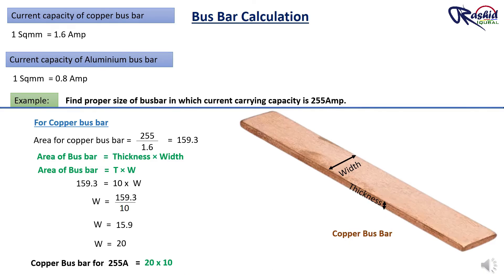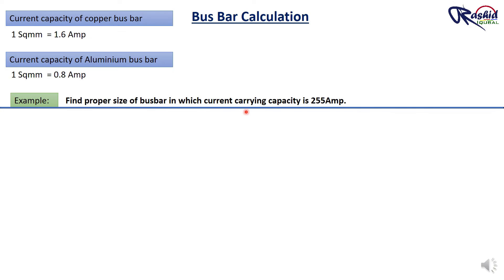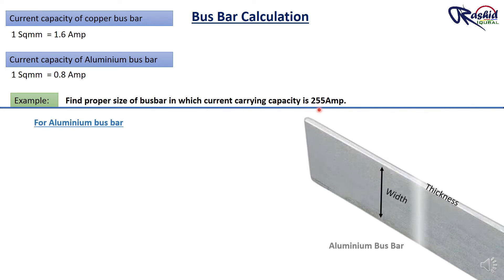Now we will calculate the size of aluminium busbar, which is capable of carrying same current, that means 255 ampere. As I mentioned above, the current carrying capacity of 1 square mm of aluminium is 0.8 ampere. Now based on this data, we can determine the appropriate size of the aluminium busbar.